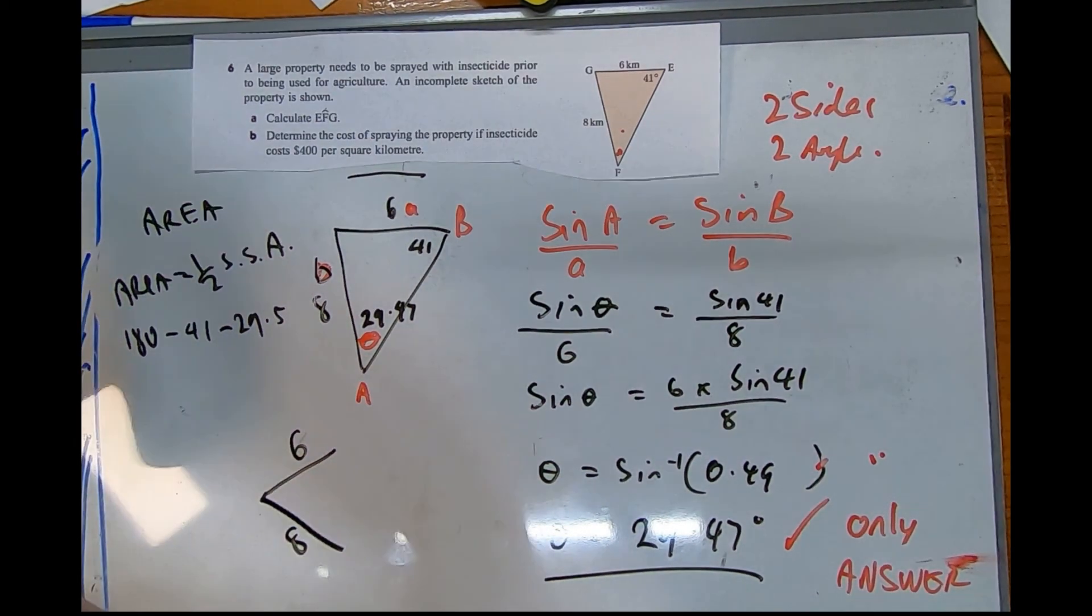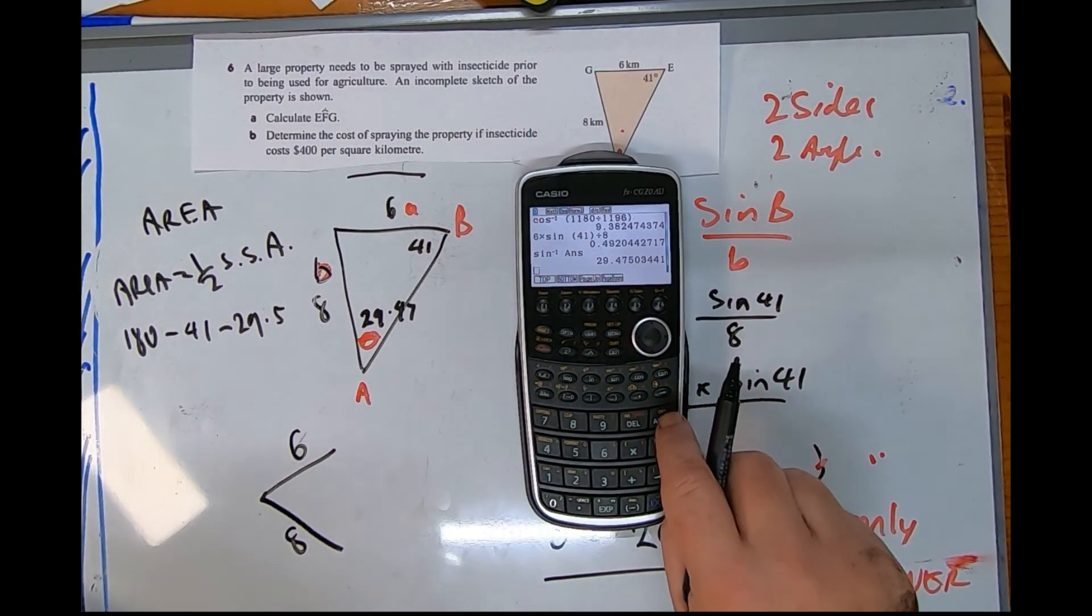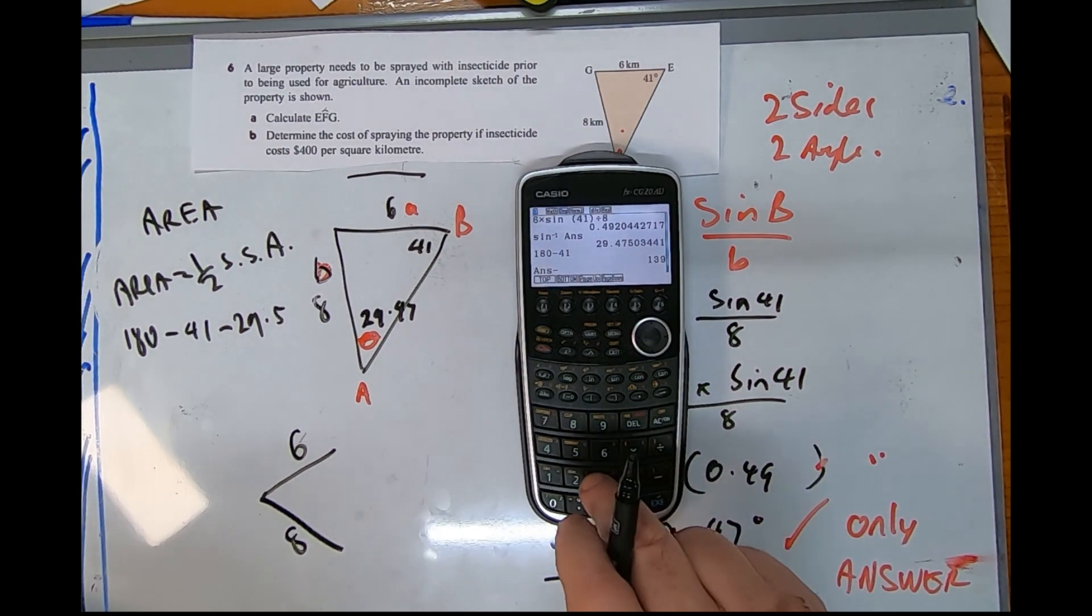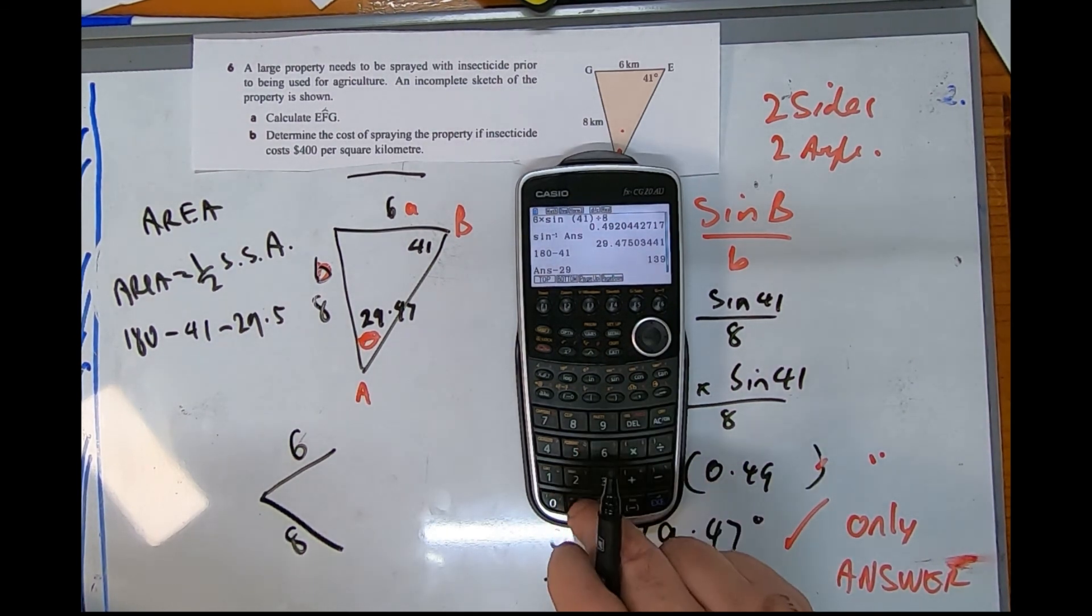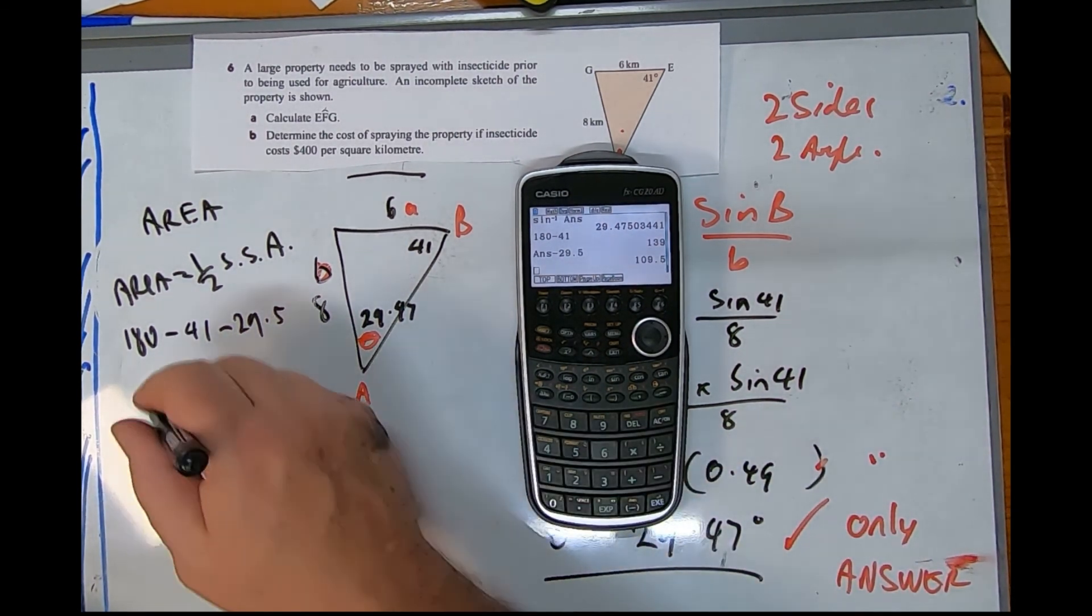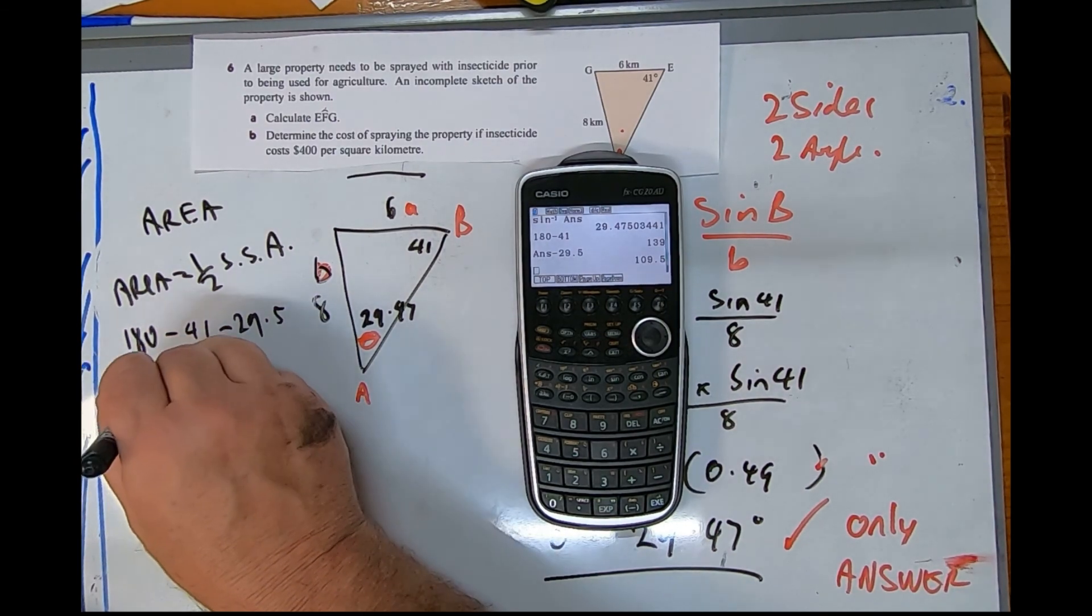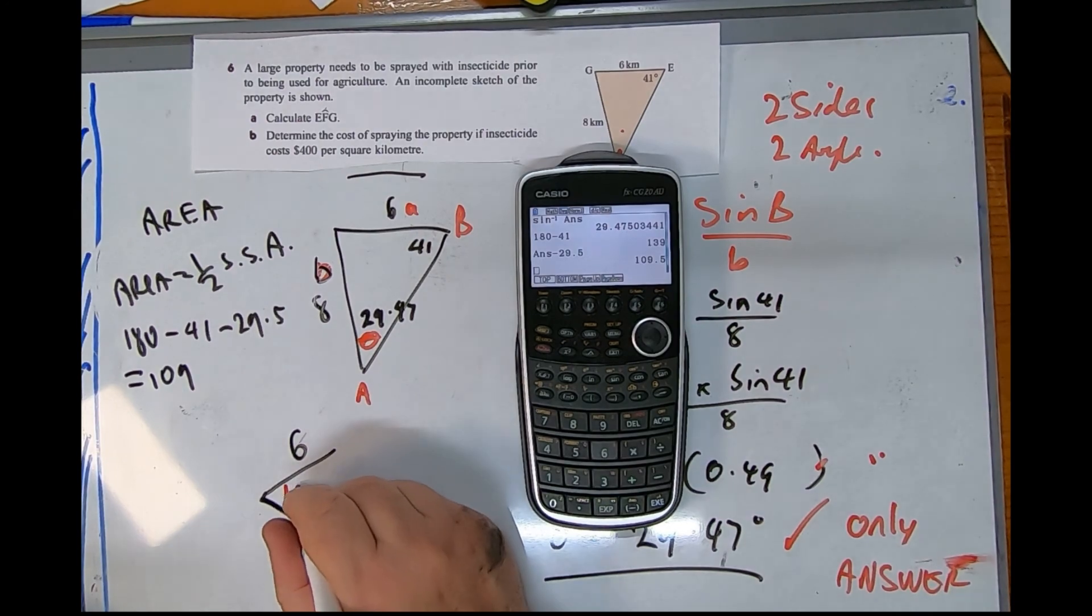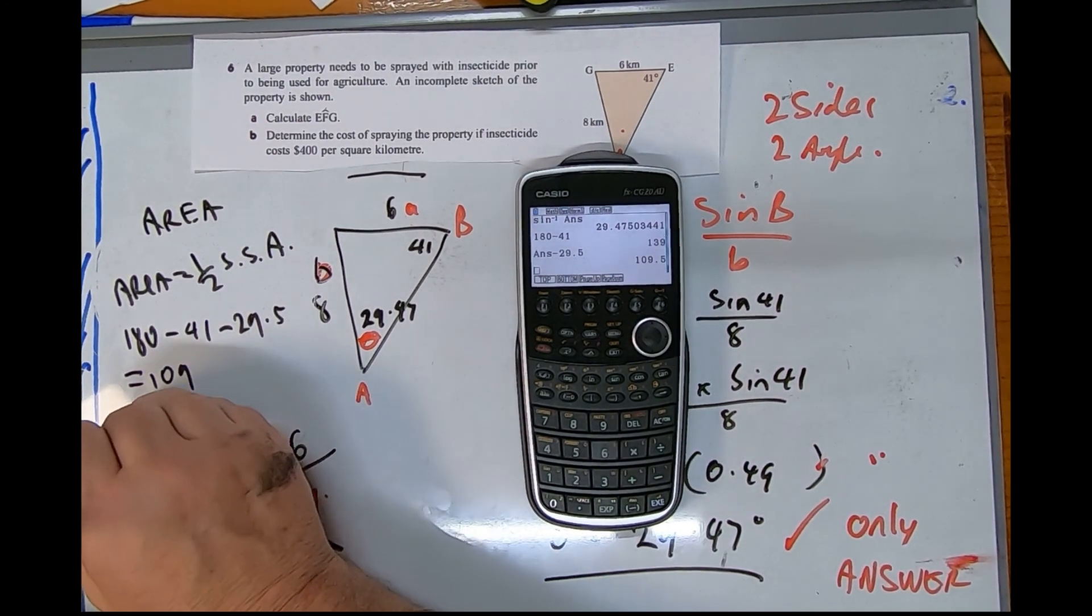What could that angle be? I do believe it's 180 take the other two numbers, take 41 take 29.5. 180 subtract 29.5 is 109.